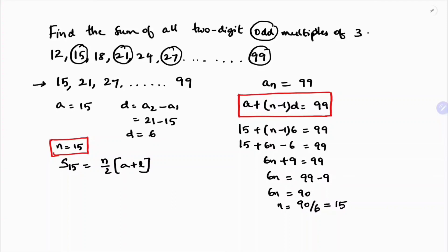Or you can calculate using another formula, Sₙ = n/2 times [2a + (n-1)d]. You can use this one, or since you know the last term is 99, you can go for this formula.